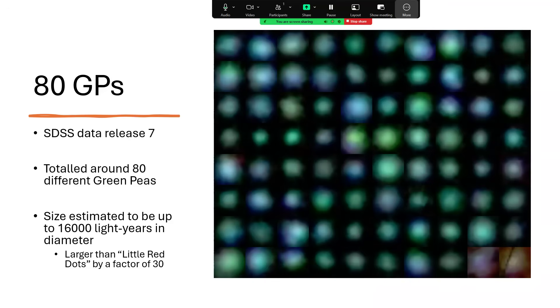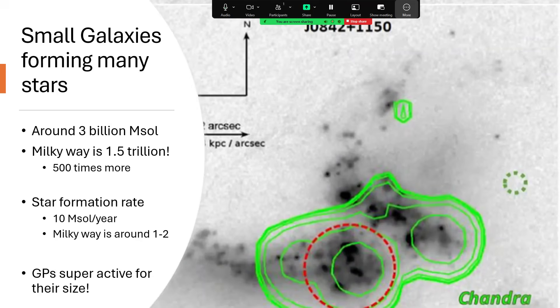So these are perhaps a later stage in the story of galaxies. We think these are about 3 billion solar masses, which is 500 times less than the 1.5 trillion of the Milky Way, so still dwarf galaxies by any standard.